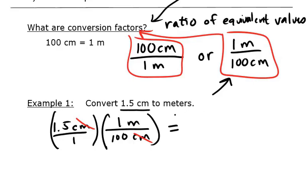Then we do the math part. Multiply the tops, 1.5, multiply the bottoms, 1 times 100, and then divide. So it will end up being 1.5 divided by 100, because multiplying and dividing by 1 doesn't change a number. We get 0.015 meters. Another way to express that would be in scientific notation, which would be 1.5 times 10 to the minus 2 meters. Either answer would be acceptable.